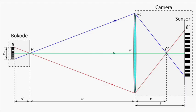The lenslet collimates the rays leaving from a point on the pattern, making them parallel to one another. These parallel rays impinge on a camera lens focused at infinity, and we obtain a magnified image of the bocode pattern on the sensor.